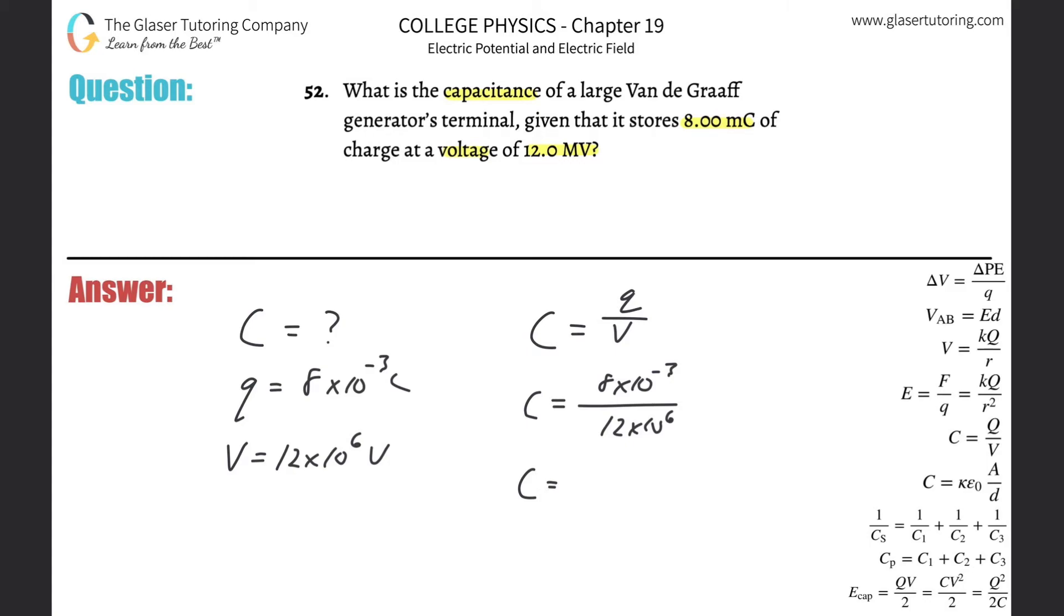And let's calculate. 8 times 10 to the minus 3 divided by 12 times 10 to the positive 6. So here we get a value of about 6.67 times 10 to the minus 10th, and that is in farads.